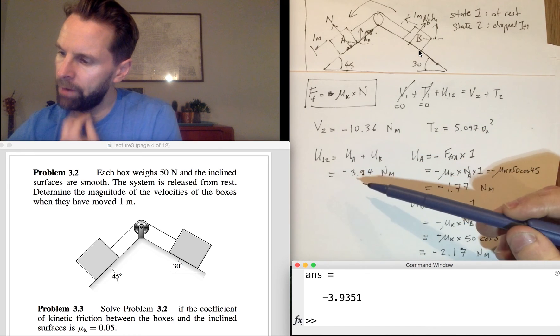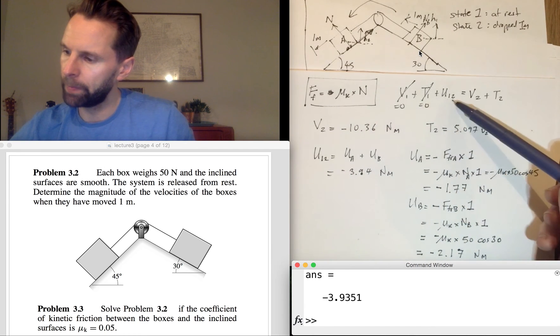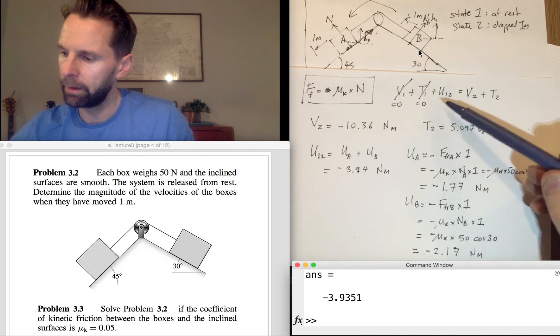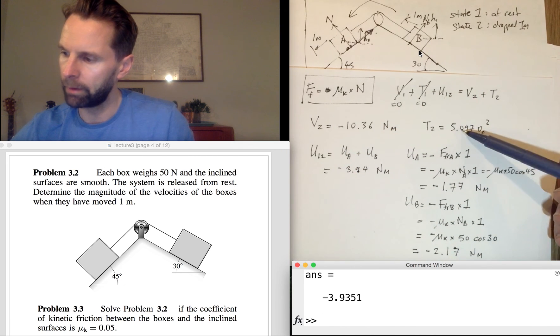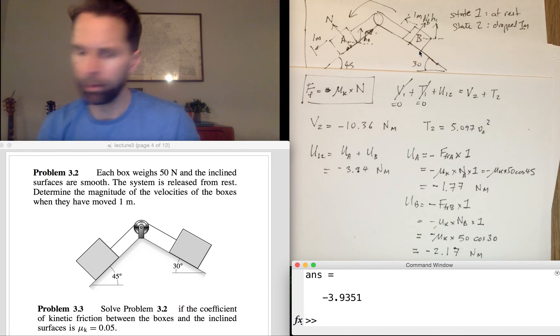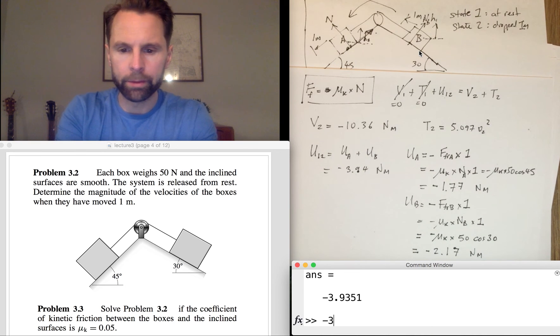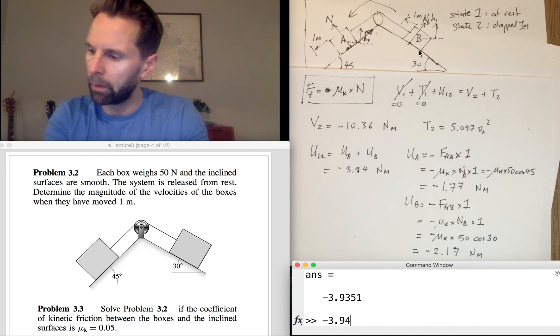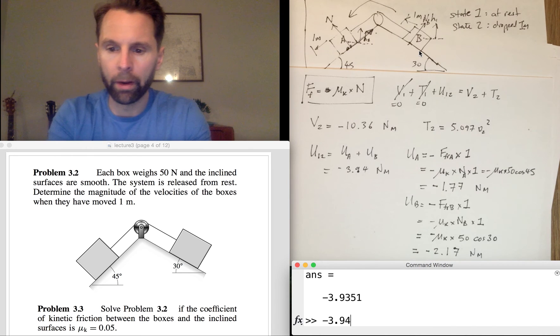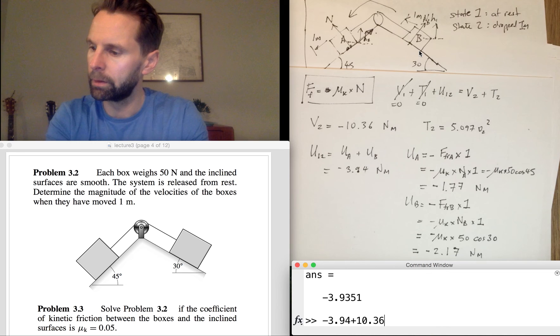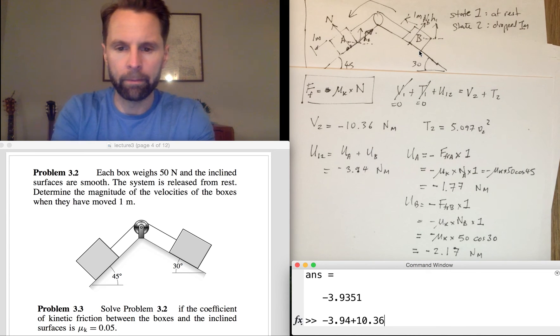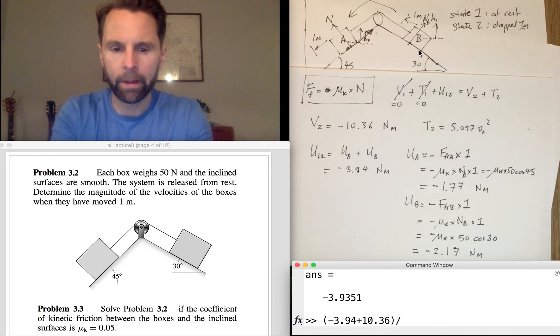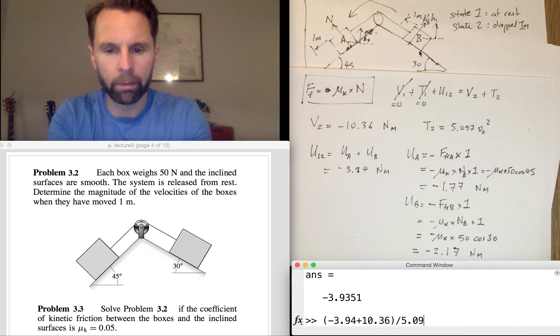So I've now got everything I need. I can substitute that into there. We'll be left with minus 3.994 on the left hand side, then I'll add V2 to both sides so plus 10.36, and then I'll divide it all by 5.097.